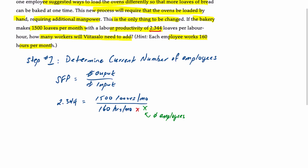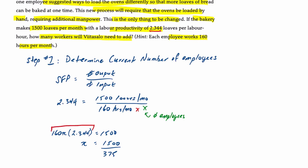Working through this: 160x times 2.344 equals 1500, therefore x equals 1500 divided by 375, which gives us 4 workers.